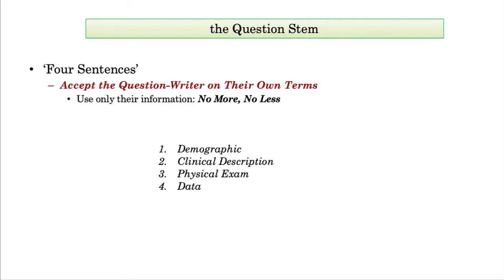Which leads to my first corollary: you must accept the question writer on their own terms. If they tell you something, it is there for a reason. If they omit information, it is generally quite intentional. The exclusion of information, or negative information, often tells you what the patient doesn't have, as you'll see in the example that follows.